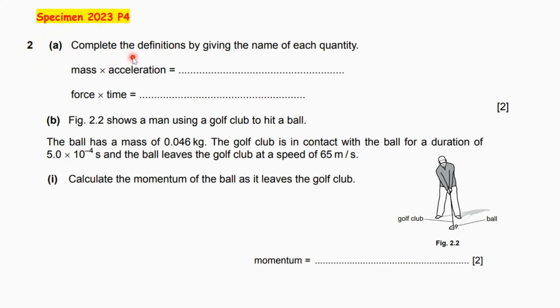Part A, complete the definitions by giving the name of each quantity. For the first one, mass times acceleration, which is according to Newton's second law of motion, equals force. For the second one, force times time equals impulse. So you get two marks, one mark for force and one mark for impulse.